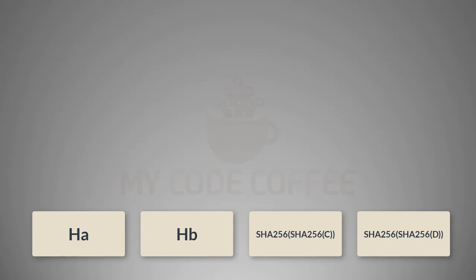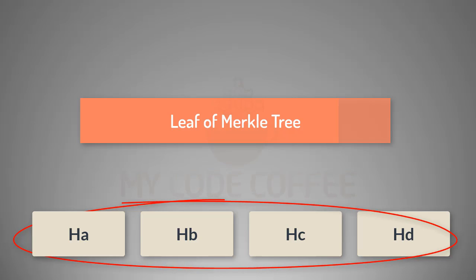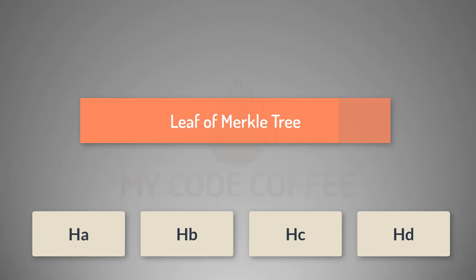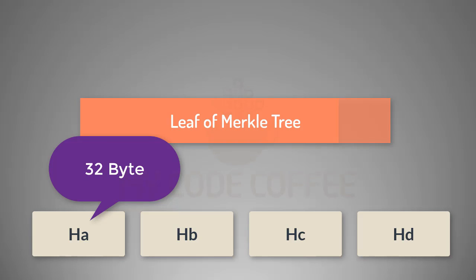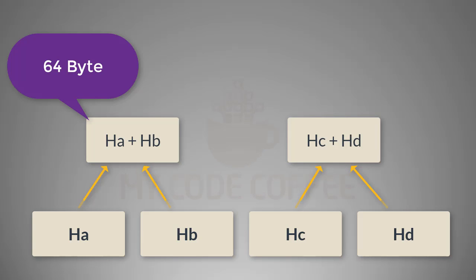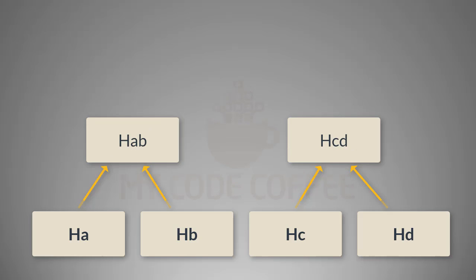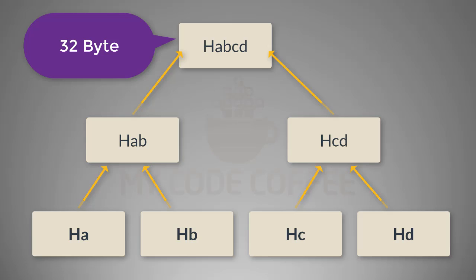Let's say HA is the double hash of transaction A, HB is the double hash of transaction B, HC is the double hash of transaction C, and so on. So the leaves of this Merkle tree will be HA, HB, HC, and HD. Each of these hash values is 32 bytes because SHA-256 always gives a 32-byte output. After that, adjacent pairs are concatenated to create a 64-byte string, which is then double hashed to get a 32-byte string.